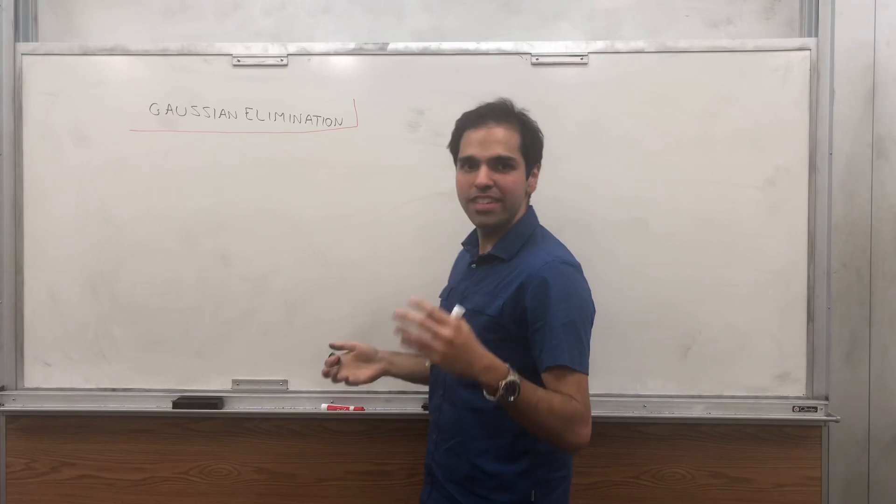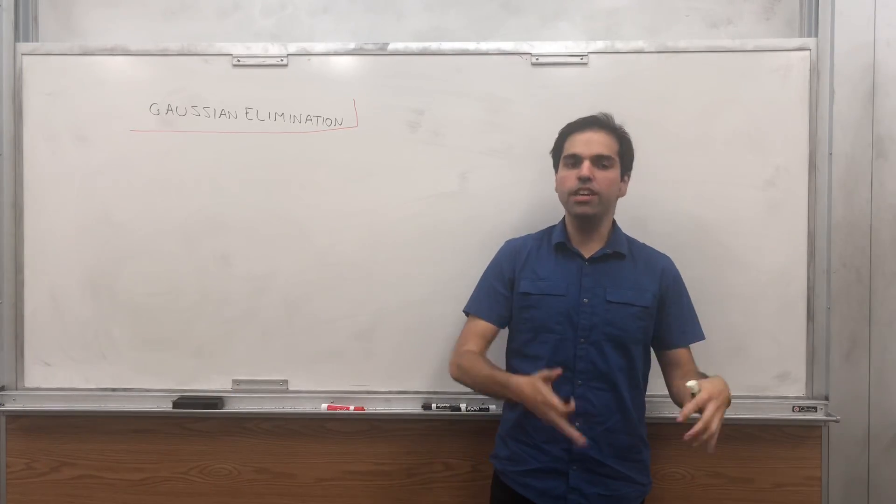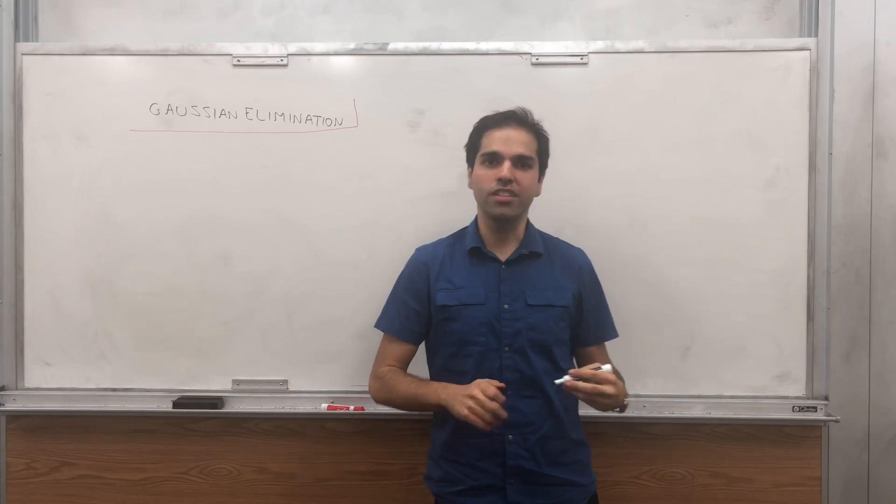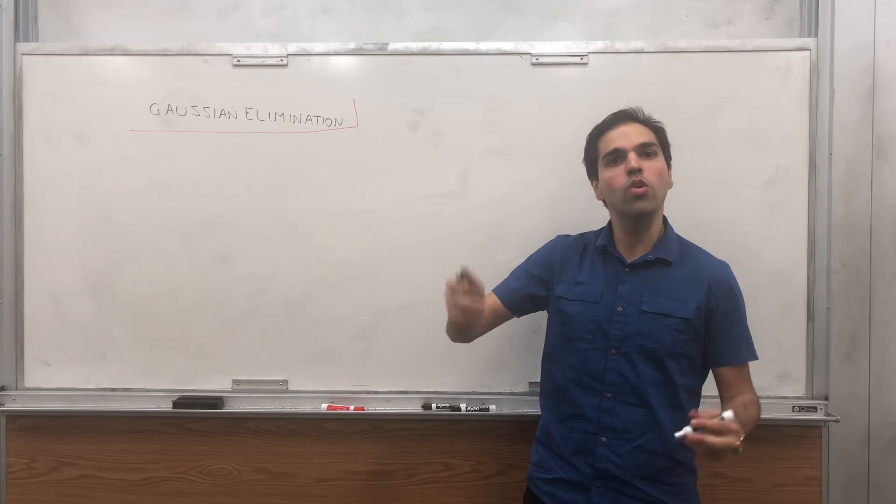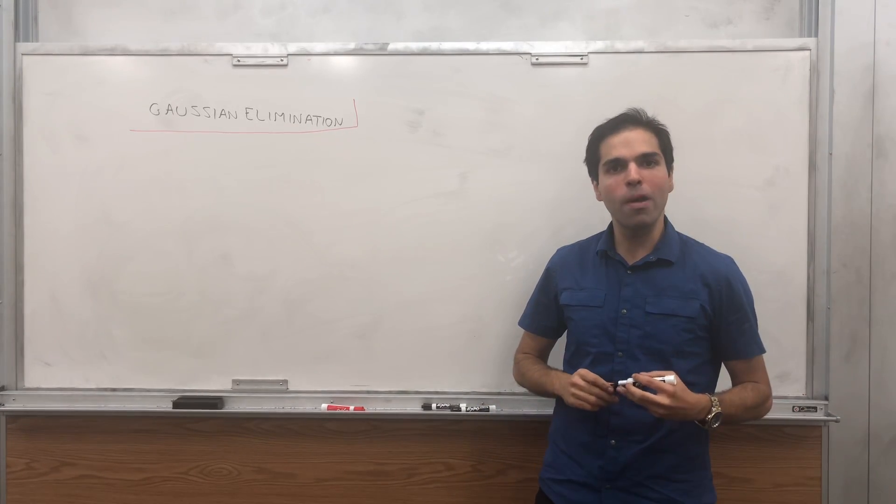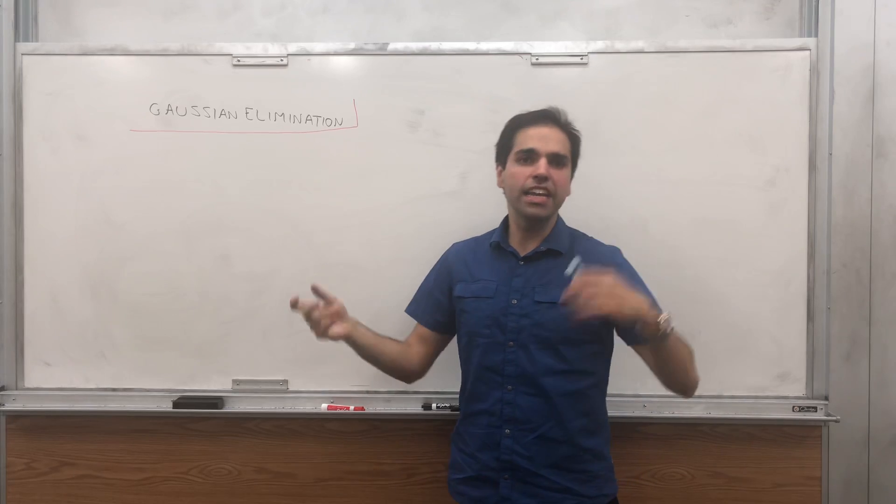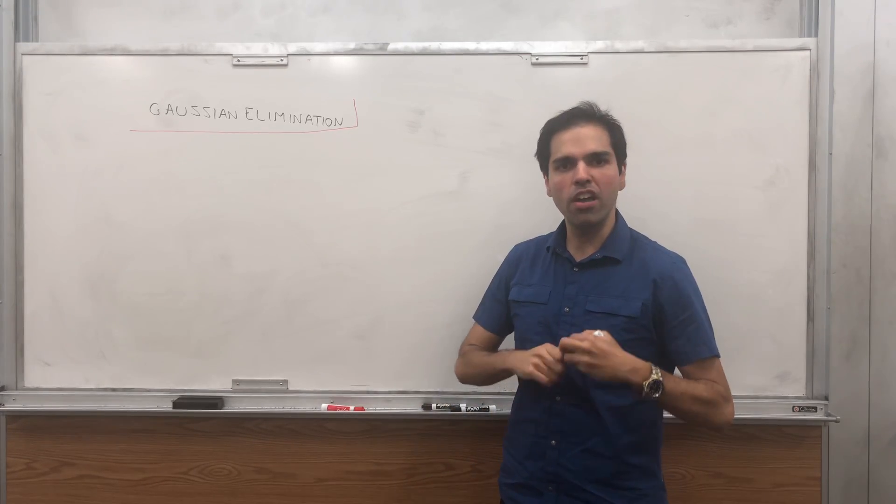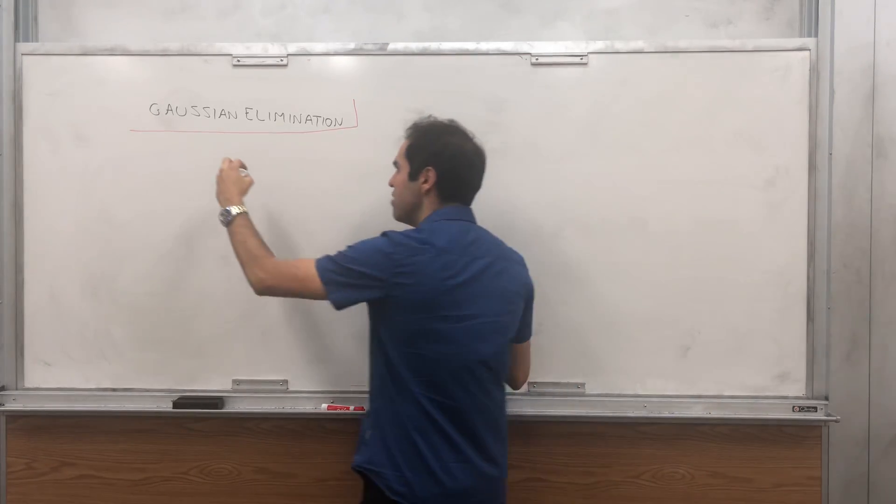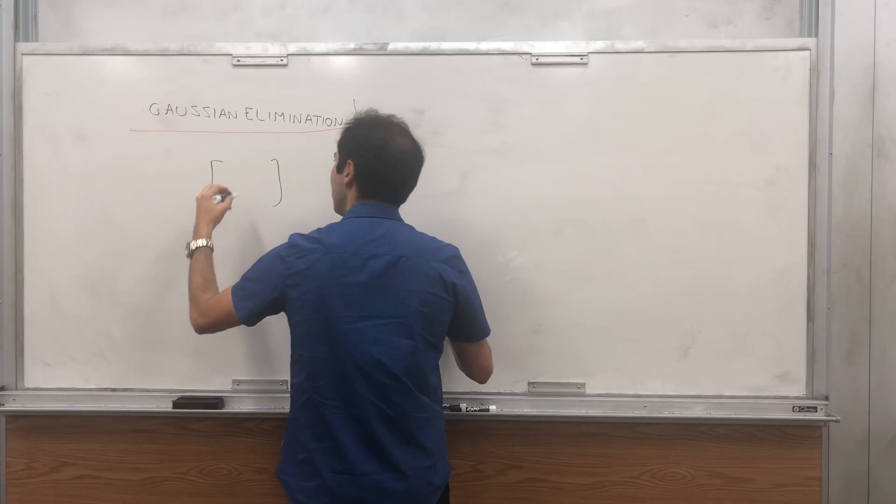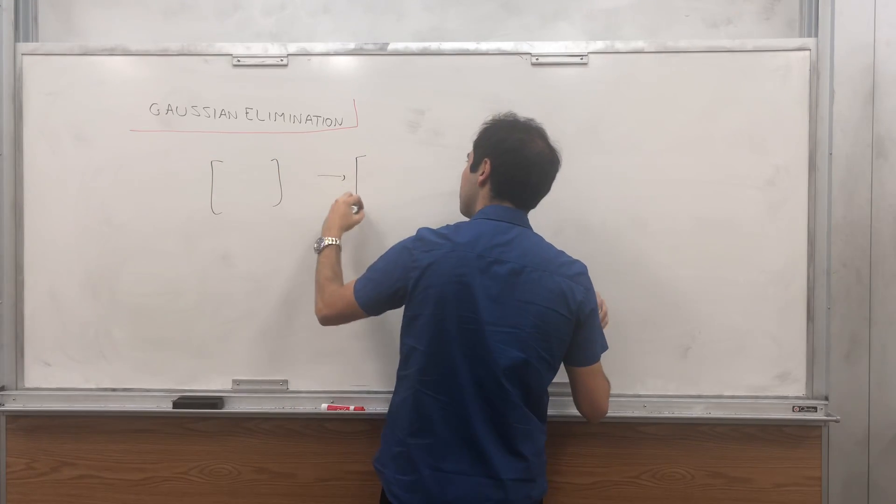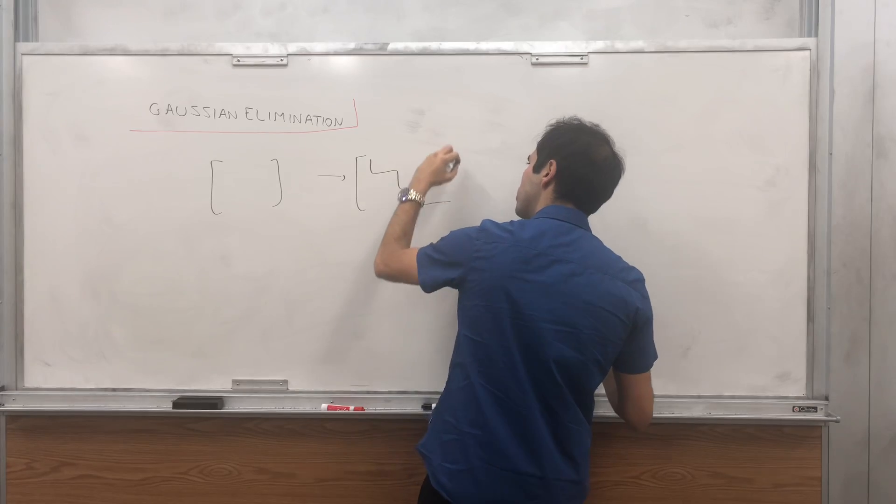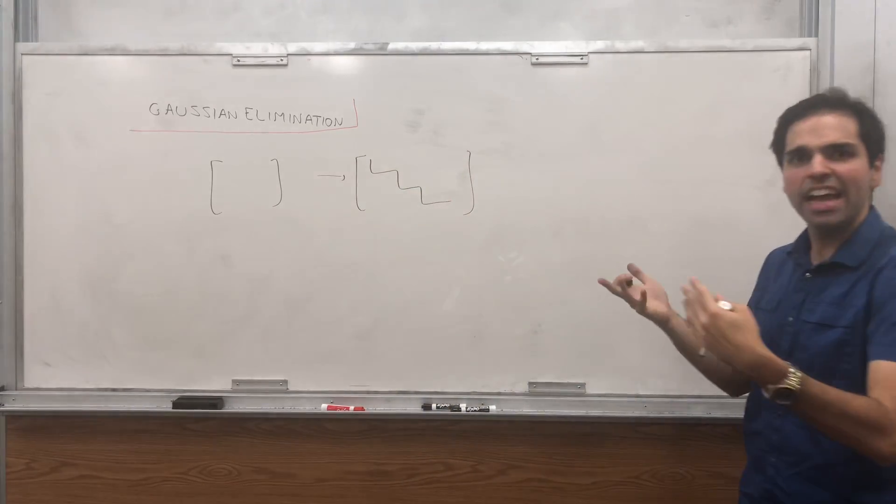So what is Gaussian elimination? Using row operations like interchanging two rows or multiplying a row by a number or adding a multiple of one row to the other, we can transform any matrix into what's called row echelon form, which is kind of like a triangular form.